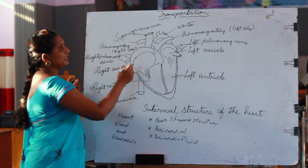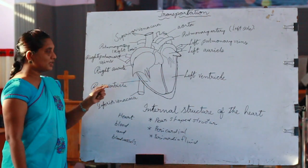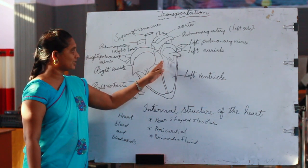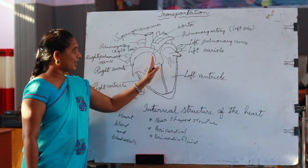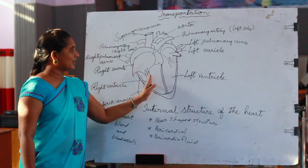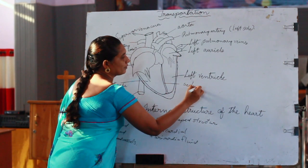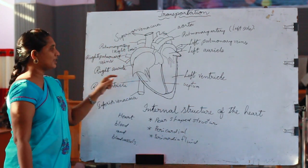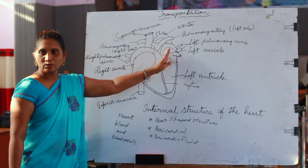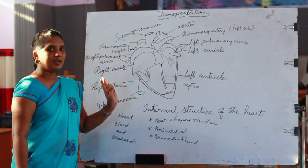Our heart is divided into four chambers. The portion that separates the left side and right side is known as the septum. The septum divides the heart into two sides: the left side and the right side.